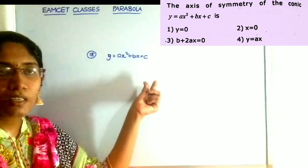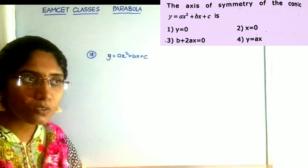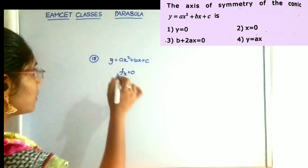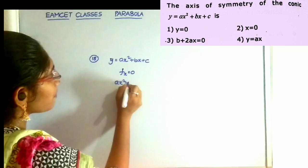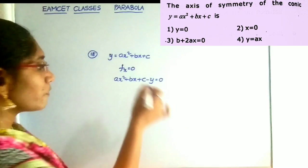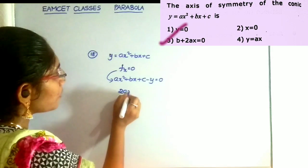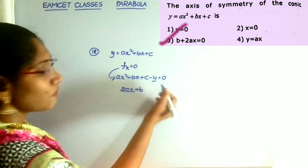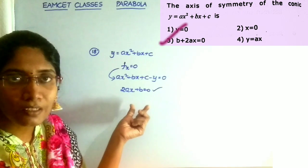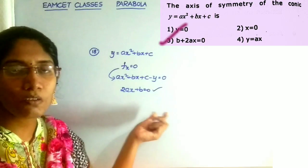The next question: the axis of symmetry of the conic y is equal to ax squared plus bx plus c. We want the axis of symmetry. Remember, finding the axis of symmetry is f_x equal to 0. The equation is ax squared plus bx plus c minus y is equal to 0. Taking the partial derivative with respect to x gives 2ax plus b is equal to 0. That is the answer — the axis of symmetry is 2ax plus b is equal to 0.